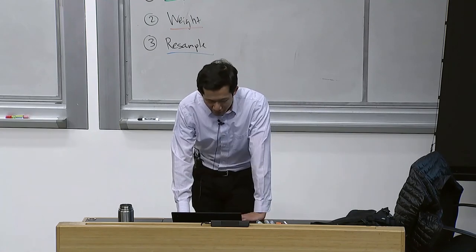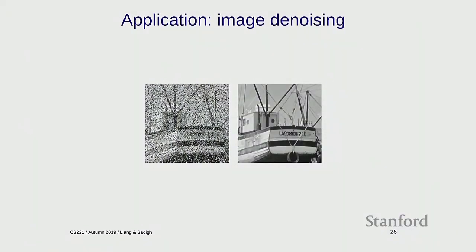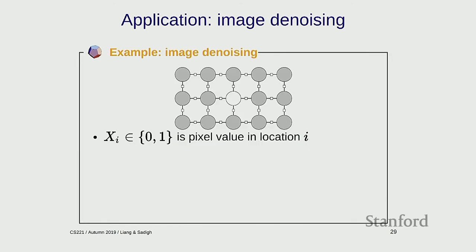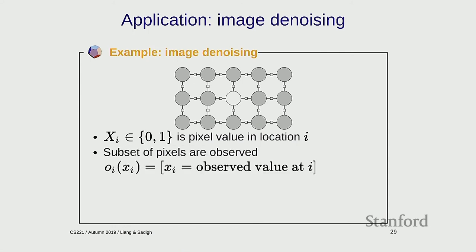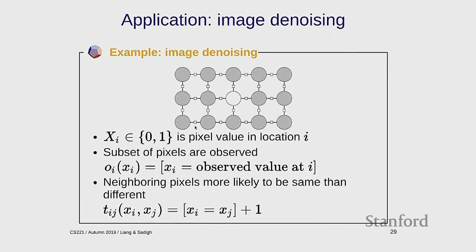An application of Gibbs sampling is image denoising. You have a noisy image and want to clean it up. Model it as a factor graph: a grid of pixel values X_i (each 0 or 1), connected in a grid. Observed pixels are fixed by a hard constraint. Transition potentials say neighboring pixels are more likely to be the same — assigning weight 2 to same-valued neighbors and 1 to different ones.